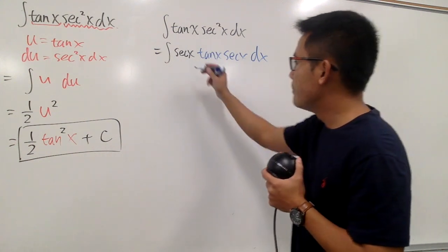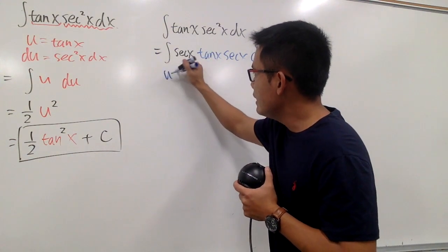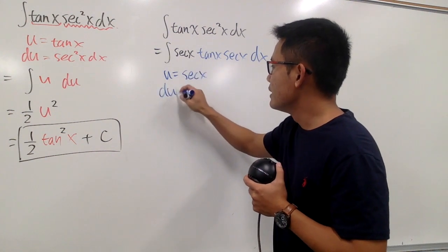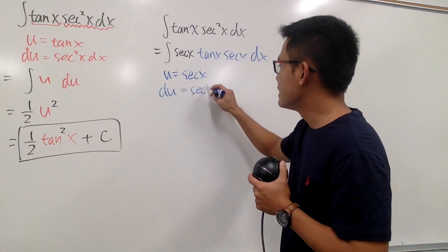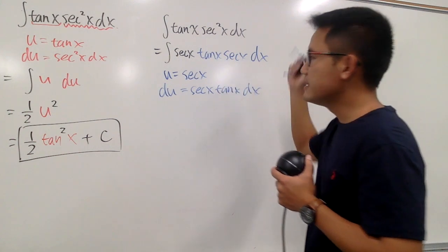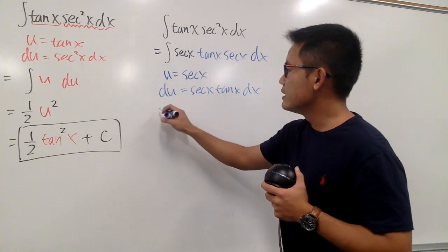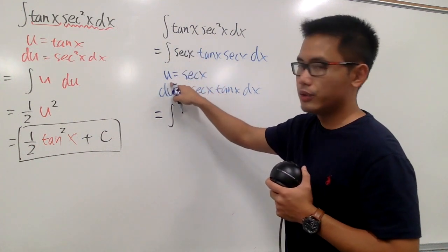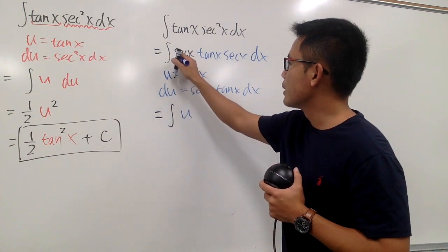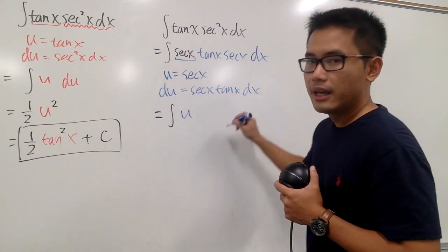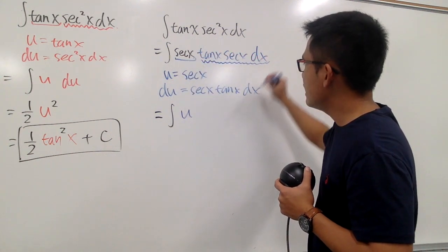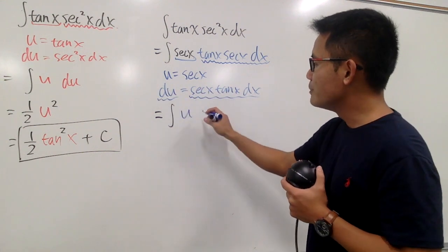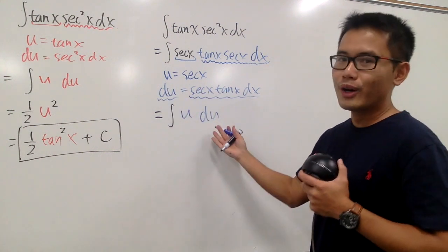And now, I'm going to let u equal to this secant x. Because now you see, du will be secant x tangent x dx. And you will see, this is equal to the integral, the secant x is the u. It's this u right here, that's the secant x. And tangent x, secant x, dx, this right here is my du. So I'm just integrating u in the u world as well.